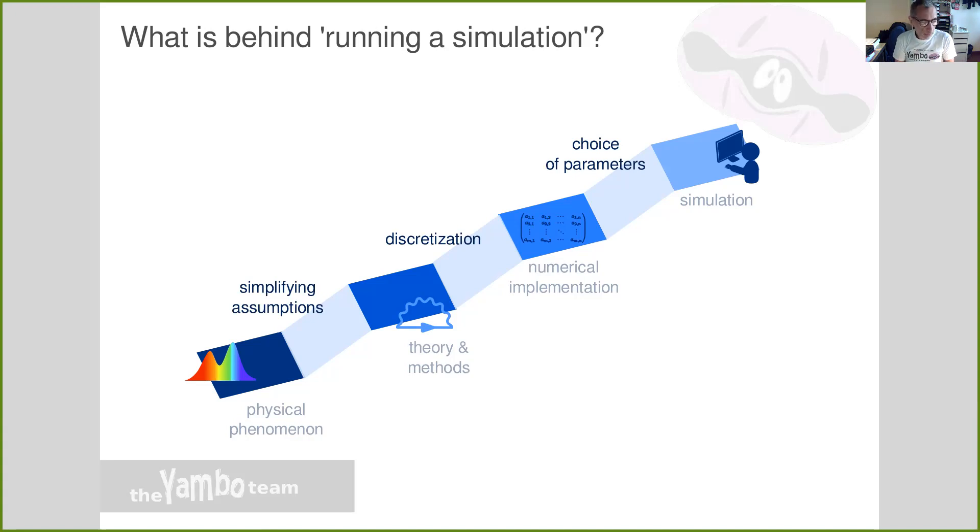Another example is photoemission. If you want to interpret the photoemission spectra, in that case you need to connect the current of ejected electrons to the internal levels of the system. So you need assumptions. Once you have assumptions, you connect your experiment to an observable. But then you need to write an equation governing the physics of this observable.